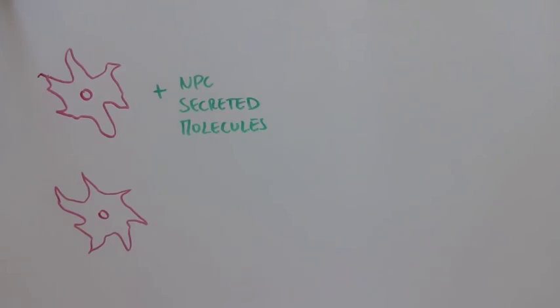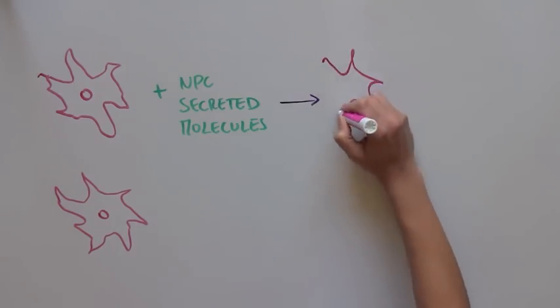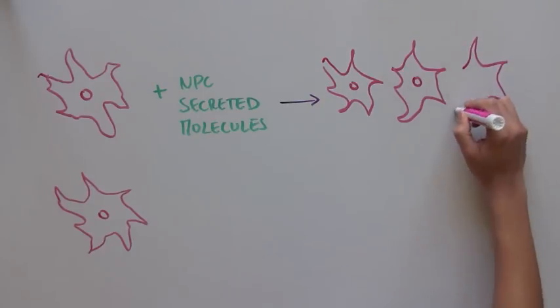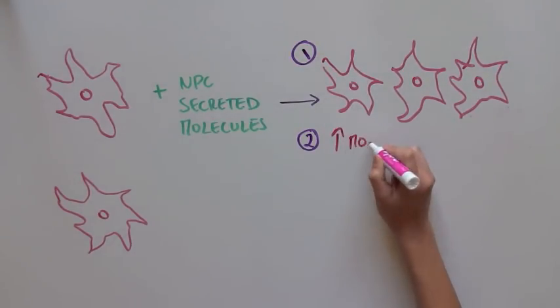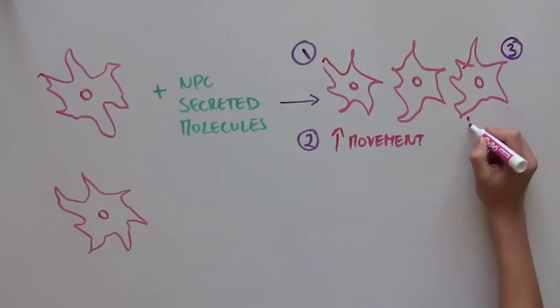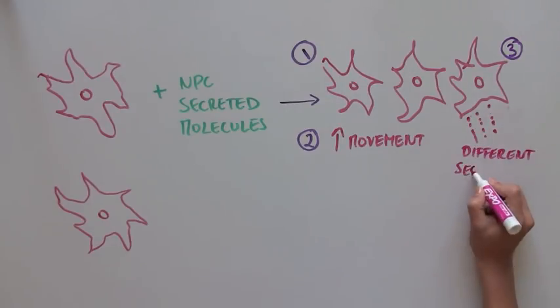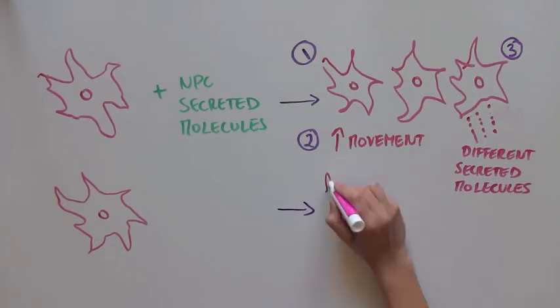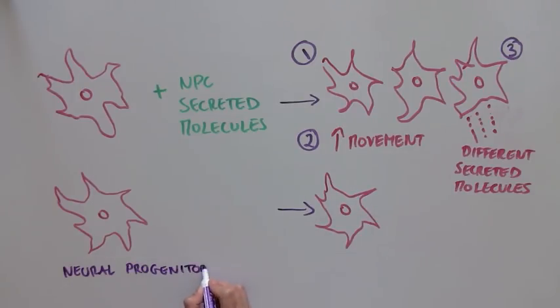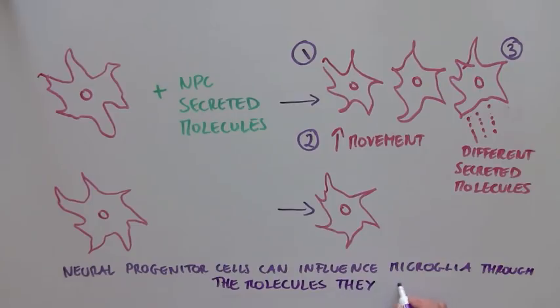So what happened to the microglia? Well, the microglia that were given NPC-secreted molecules started to divide. They moved around more, and they changed the types of secreted molecules they produced. So this was exciting and suggested that NPCs can influence microglia function through NPC-secreted molecules.